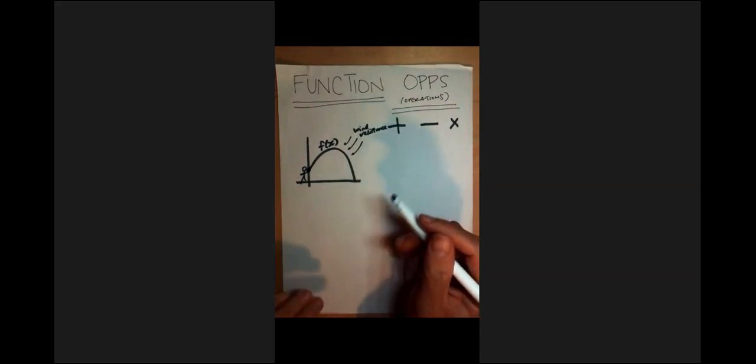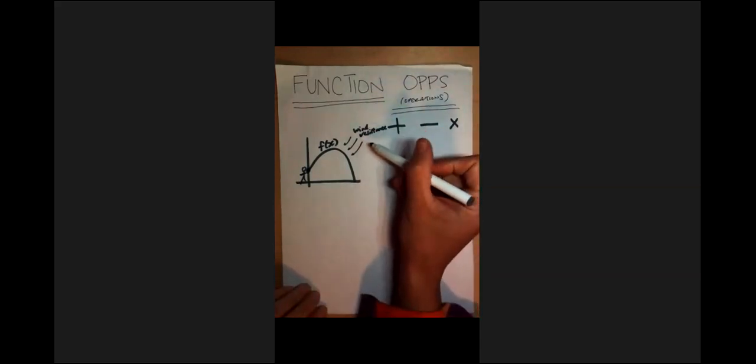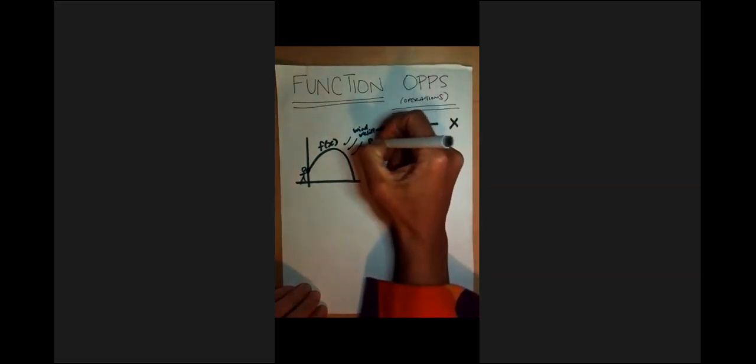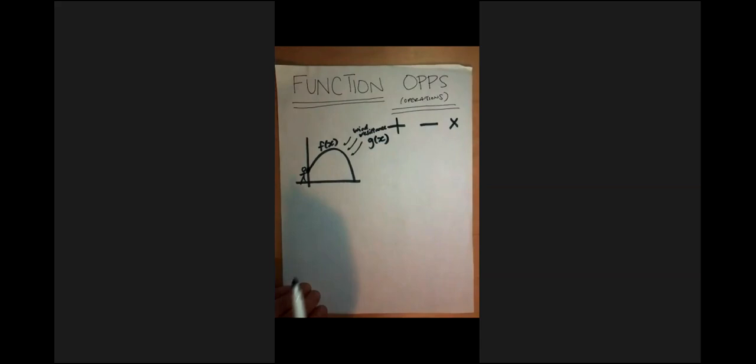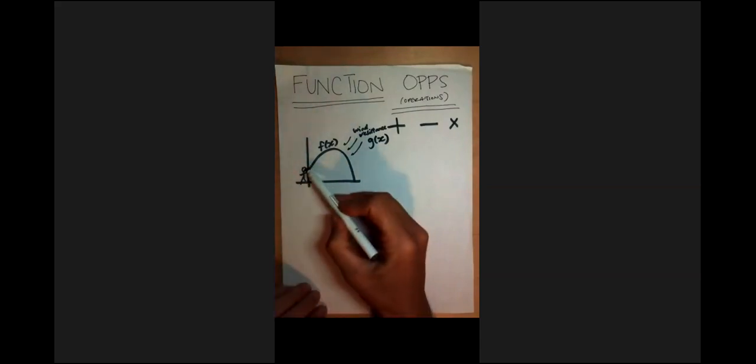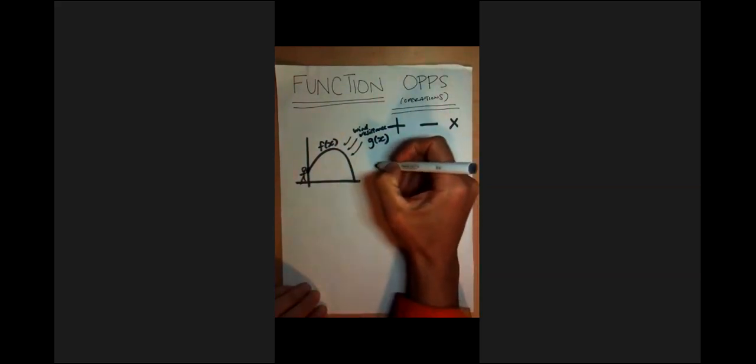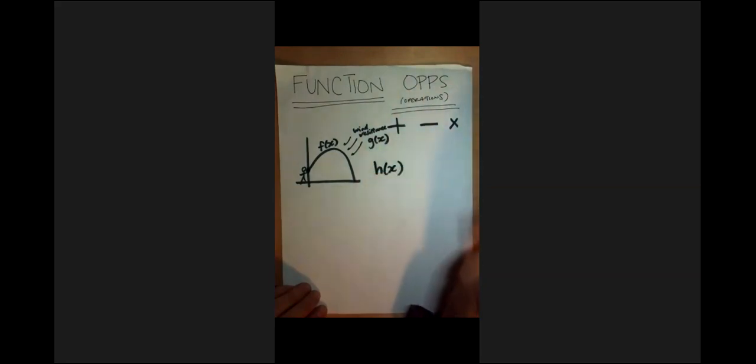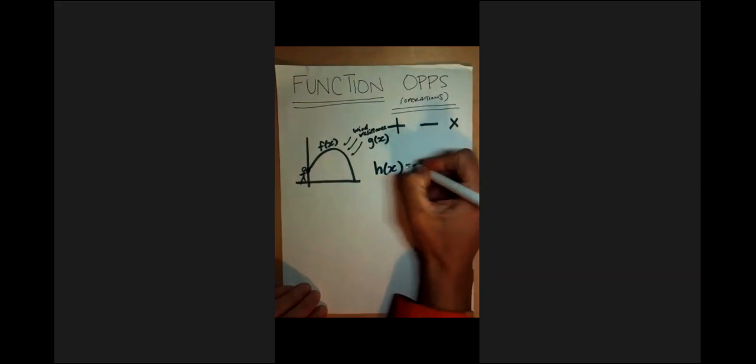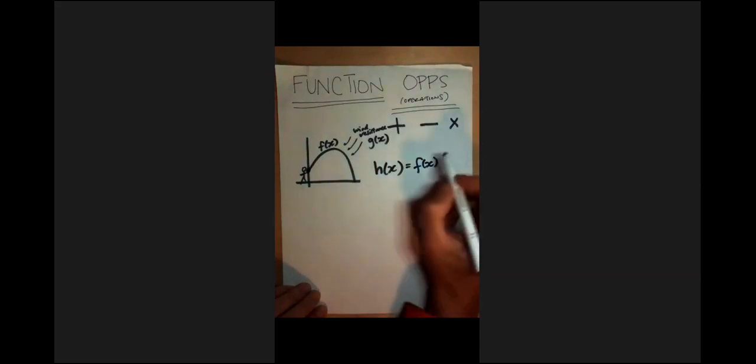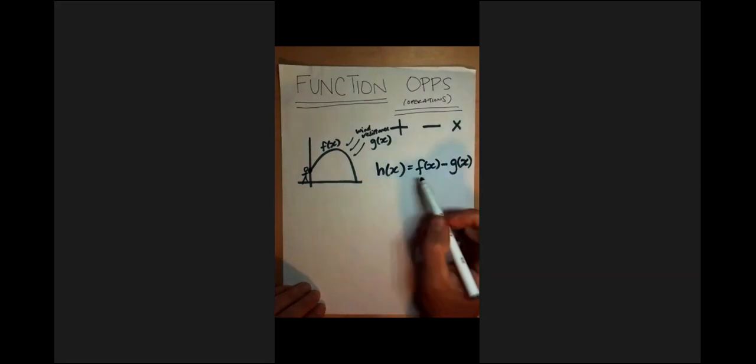And the true motion is described by taking our graph here and subtracting off some wind resistance. So really, our new function that accurately describes the height of the object would be our quadratic subtracting off our wind resistance. So let's do an example.